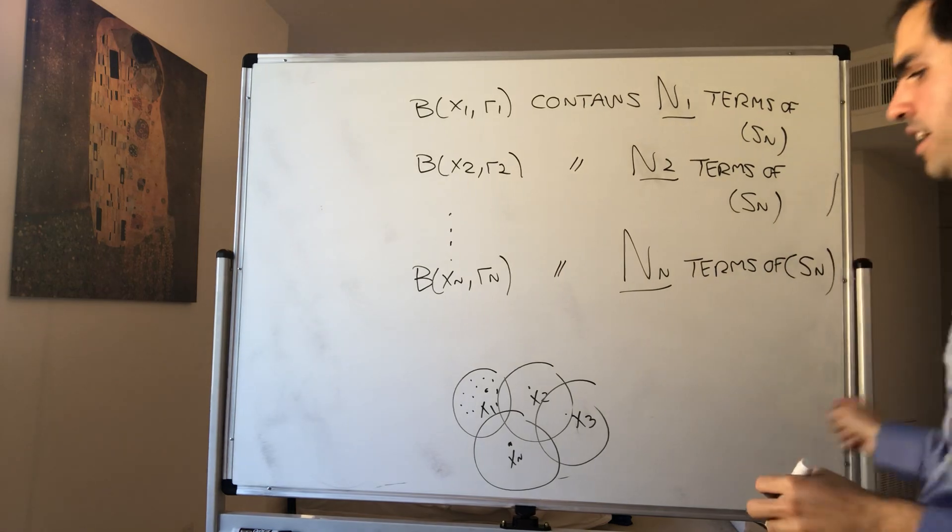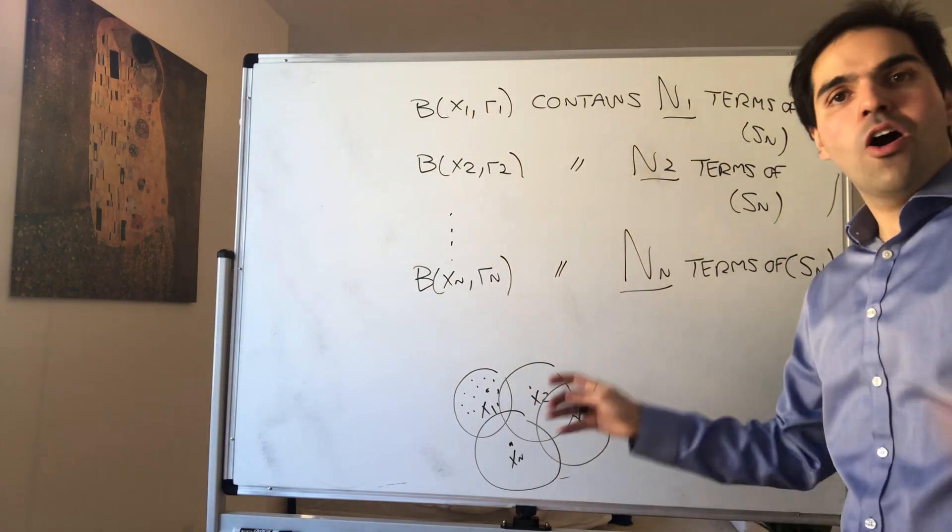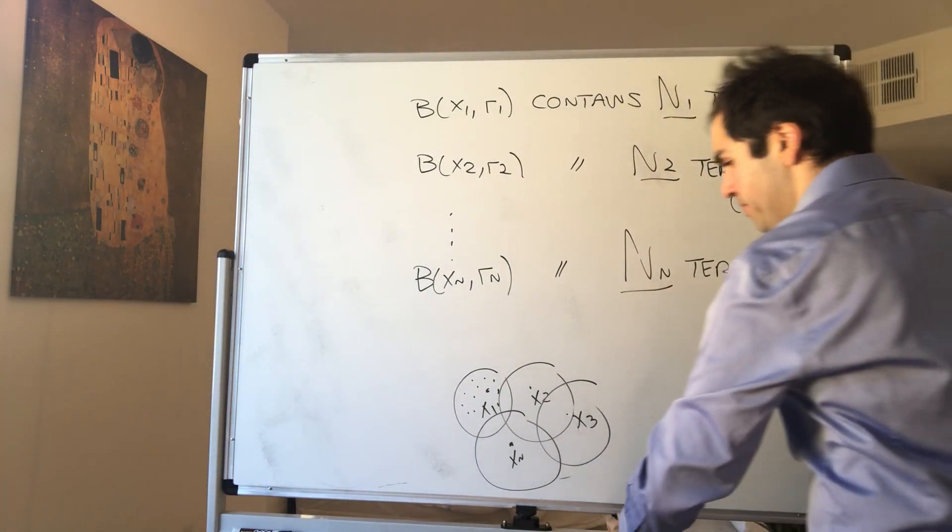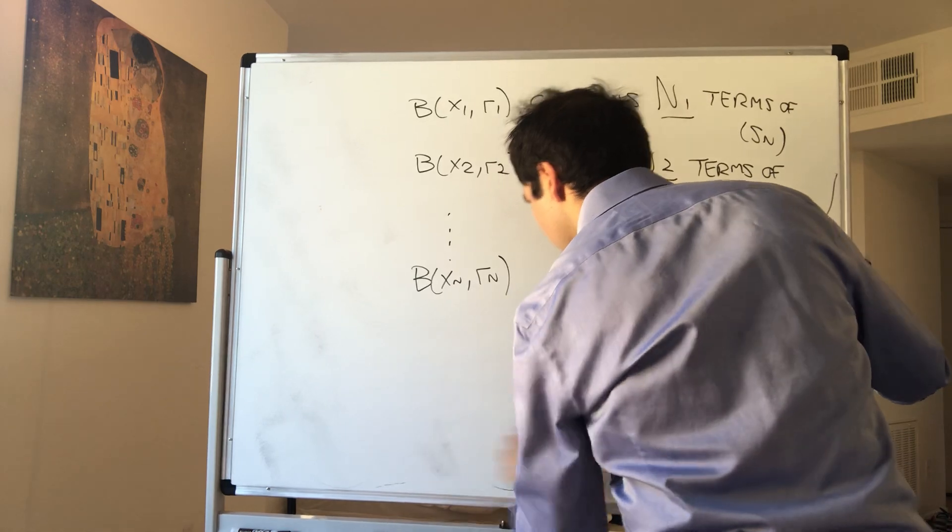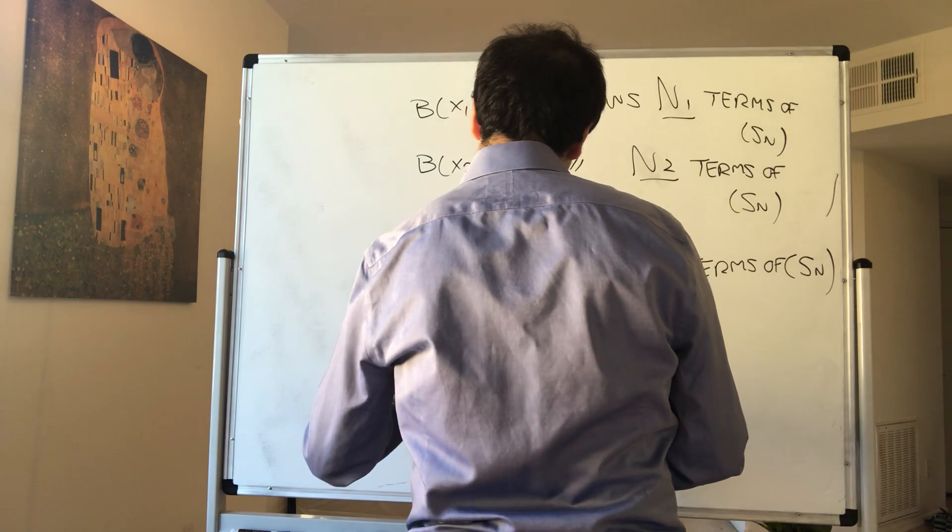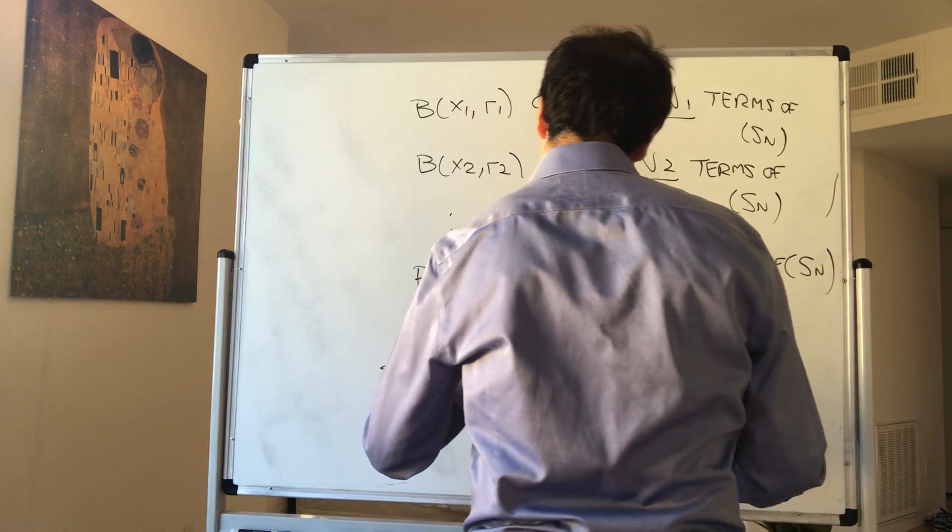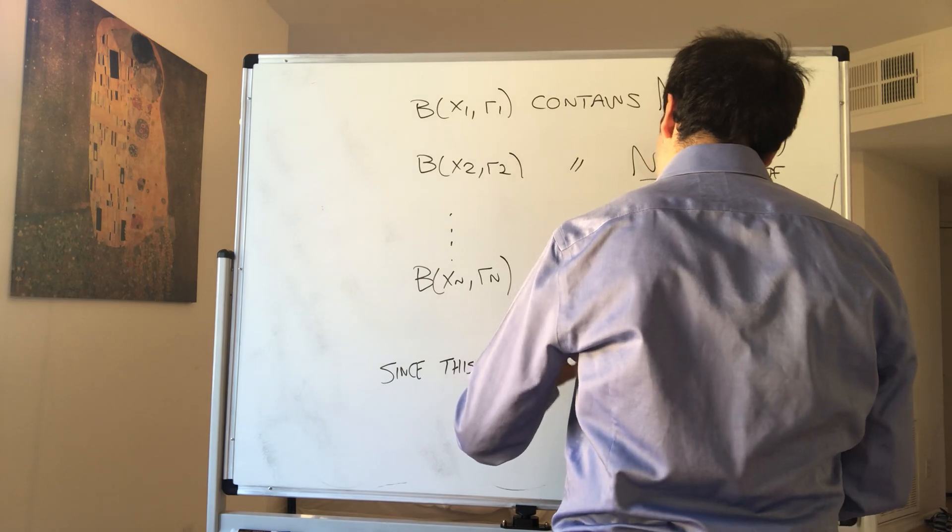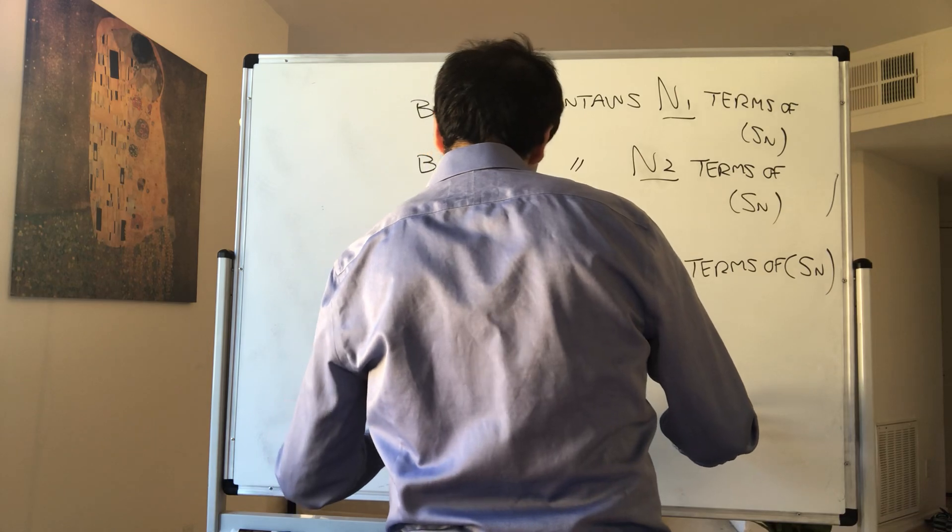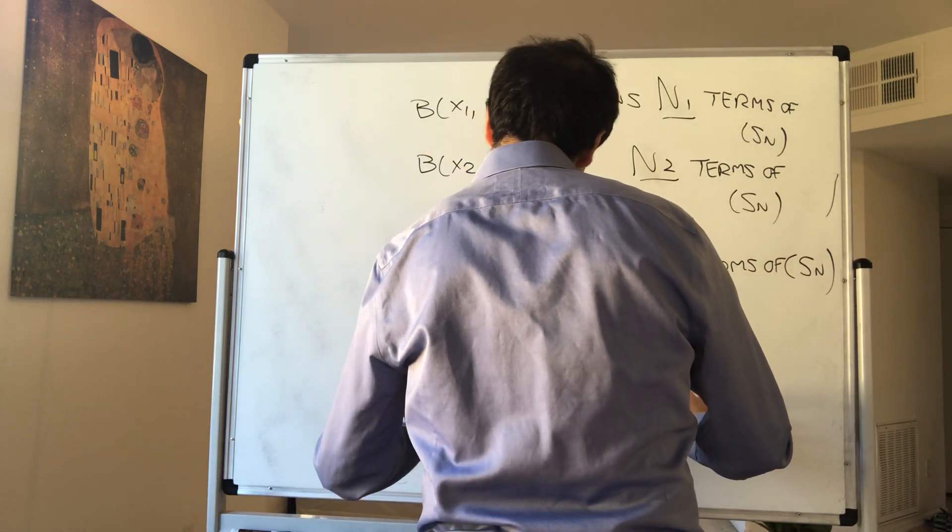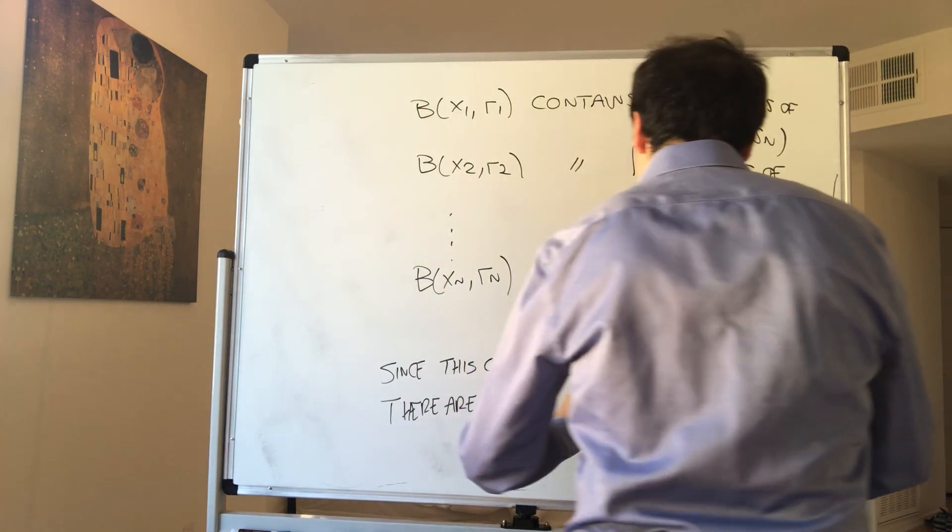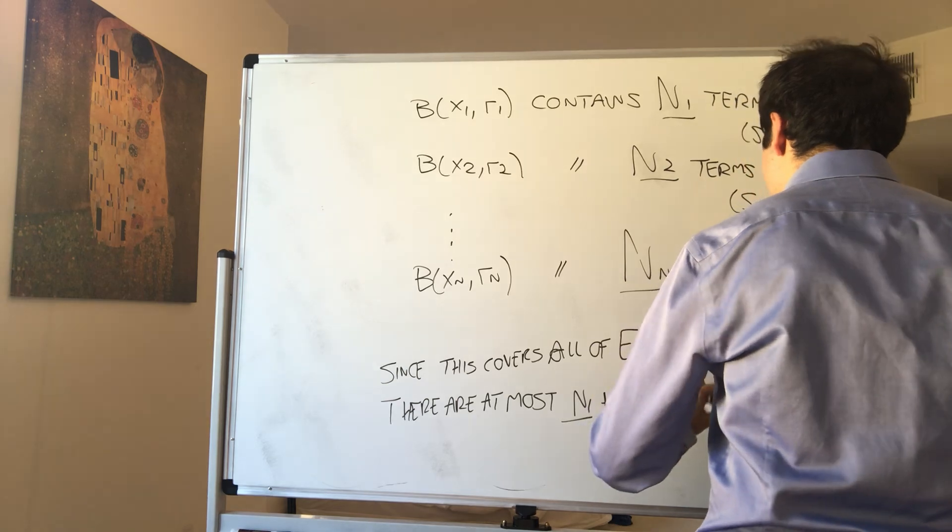So what does that mean? How many terms of Sn are there in the whole set? Well, just N1 plus N2 up to NN. So since this covers all of E, there are at most N1 plus dot dot dot plus NN terms of Sn.